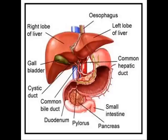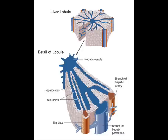This is a labelled diagram showing the liver and surrounding organs. As you can see, it shows the two lobules of the liver as well as the gallbladder and the esophagus.